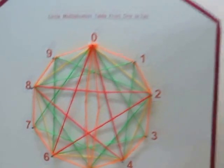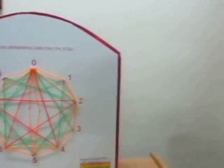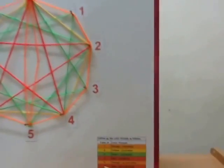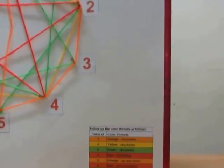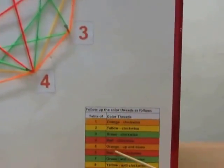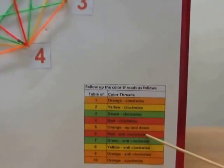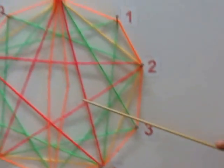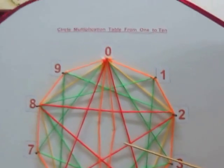Now, as we understand the section up and down, let us go to section anticlockwise. For example, let us start the table of 6. Red thread anticlockwise.